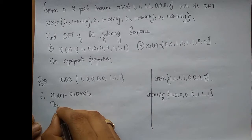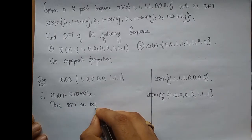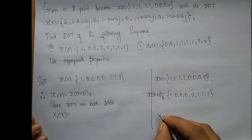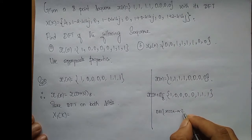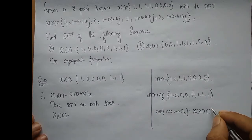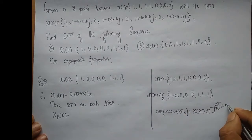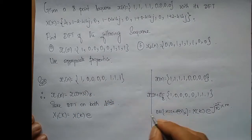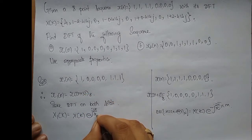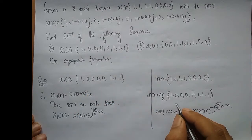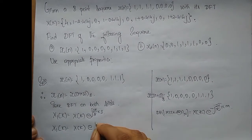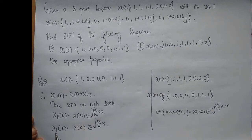Now if I take DFT on both sides, I get X1 of k. Which property do I use? The DFT of X(n - m) mod N is X[k] multiplied by e^(-j2πkm/N). Similarly here, since I have a left shift (plus), it becomes X[k] multiplied by e^(+j2π/8 · k · 3). So X1 of k equals X[k] · e^(j3πk/4).